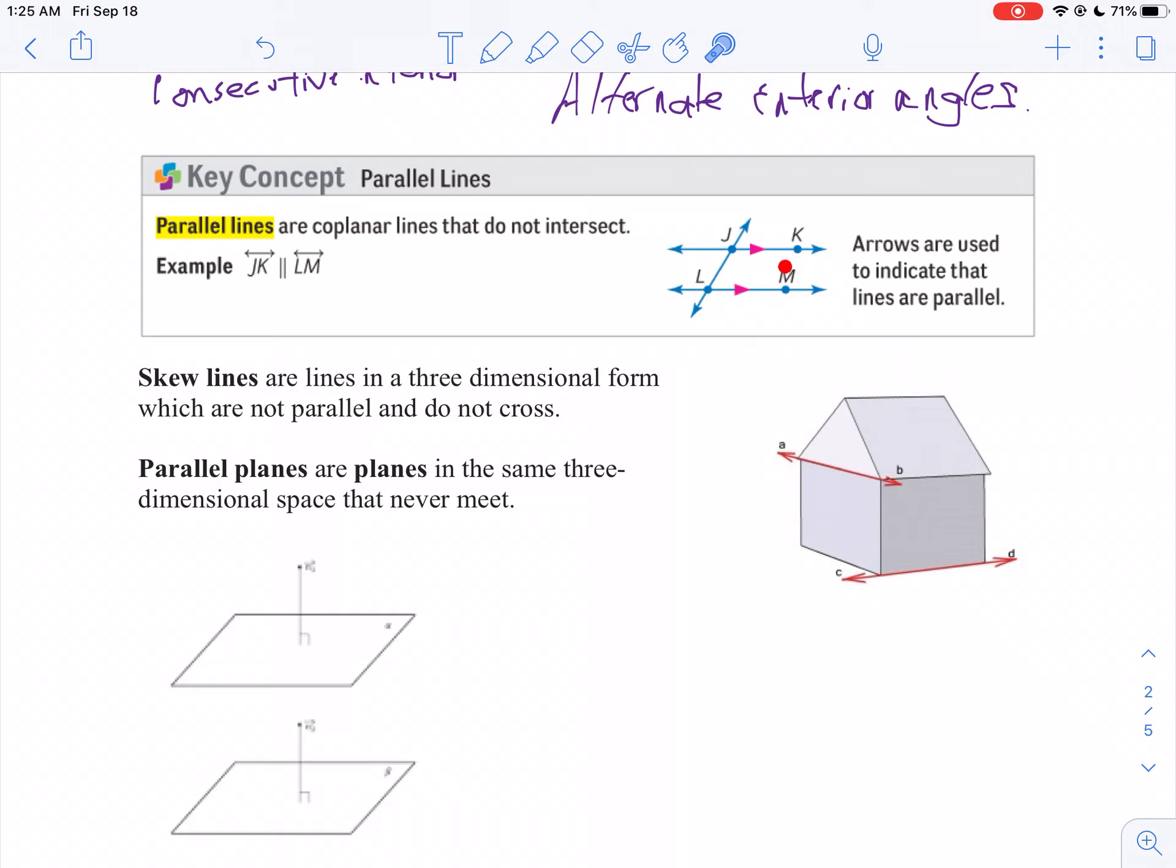Parallel lines are always the same distance apart. Skew lines will not be the same distance apart, but they still never intersect. If you have planes,